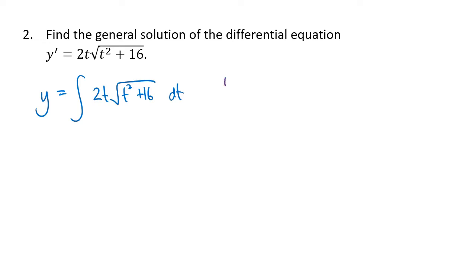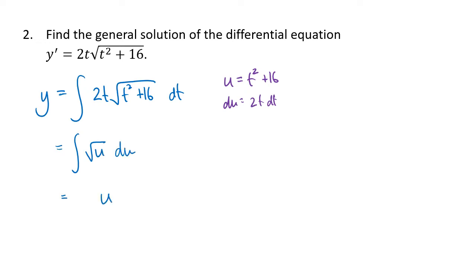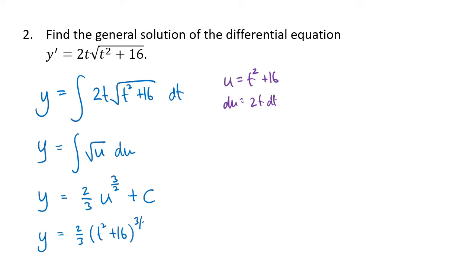This integral is a little bit more complicated because we have to do a substitution: u equals t squared plus 16, du equals 2t dt. But we have a 2t right there, so this is pretty straightforward — it gives us the antiderivative of the square root of u du. Square root of u is u to the 1 half, so the antiderivative is u to the 3 halves multiplied by 2 thirds plus c. We back-substitute to write this as 2 thirds times t squared plus 16 raised to the 3 halves plus c, and that's our solution.